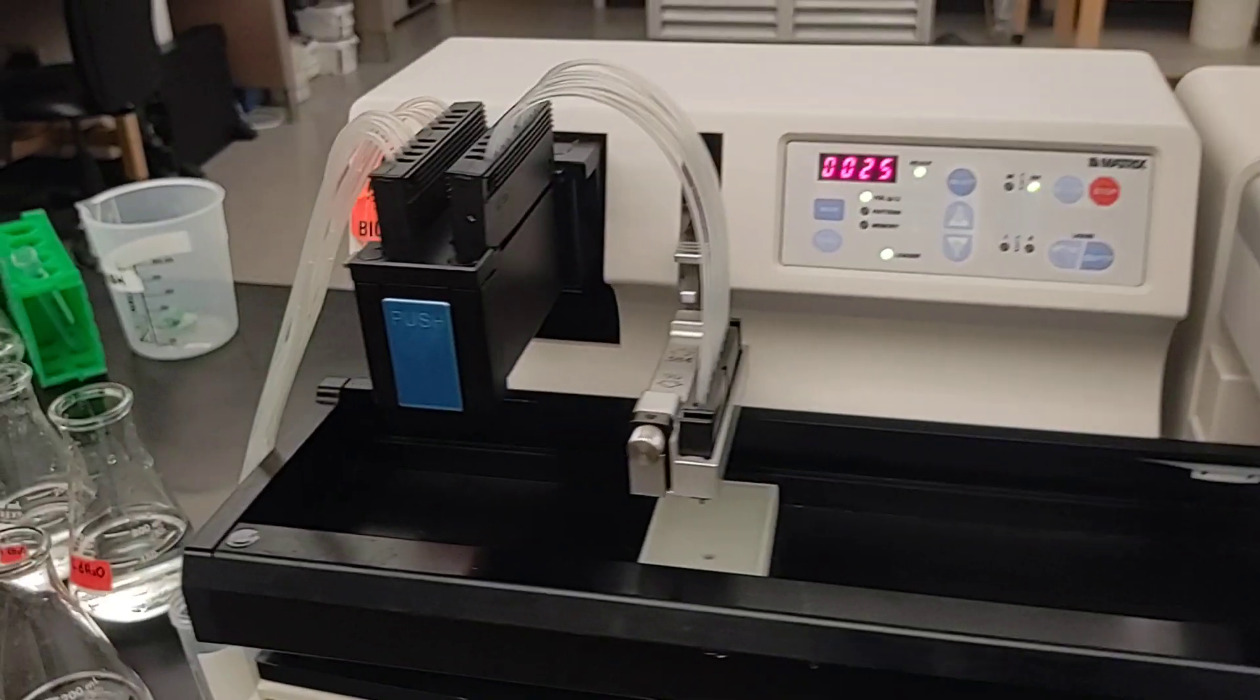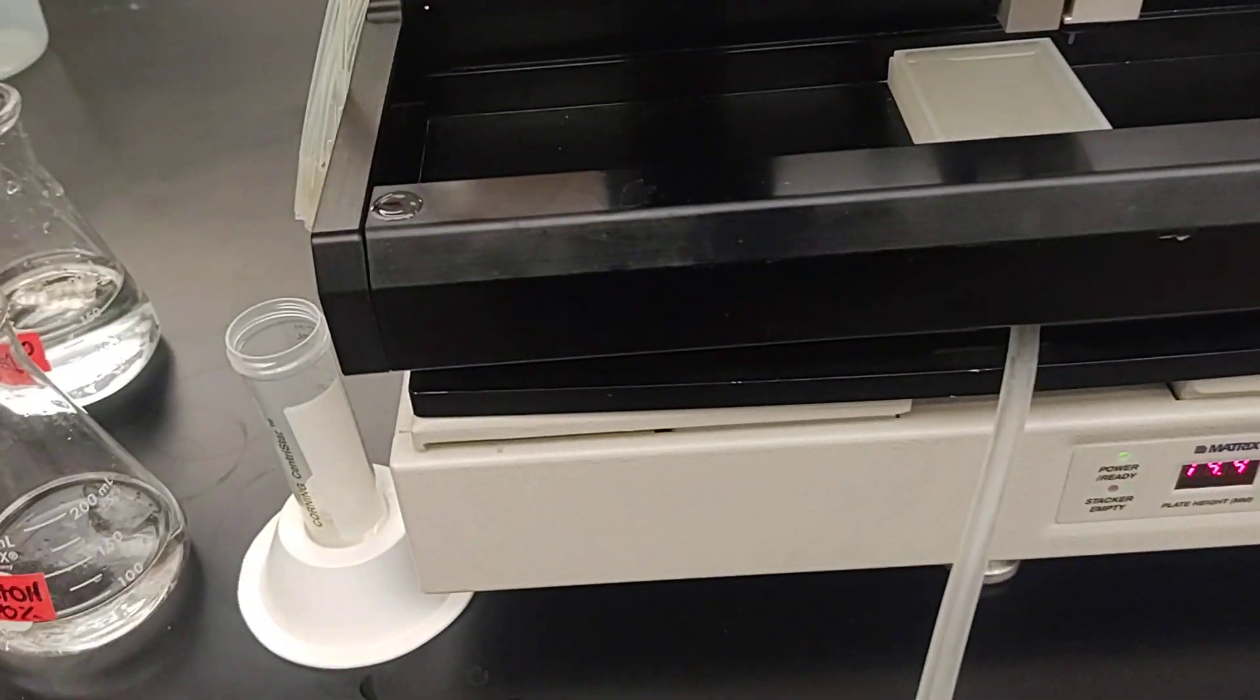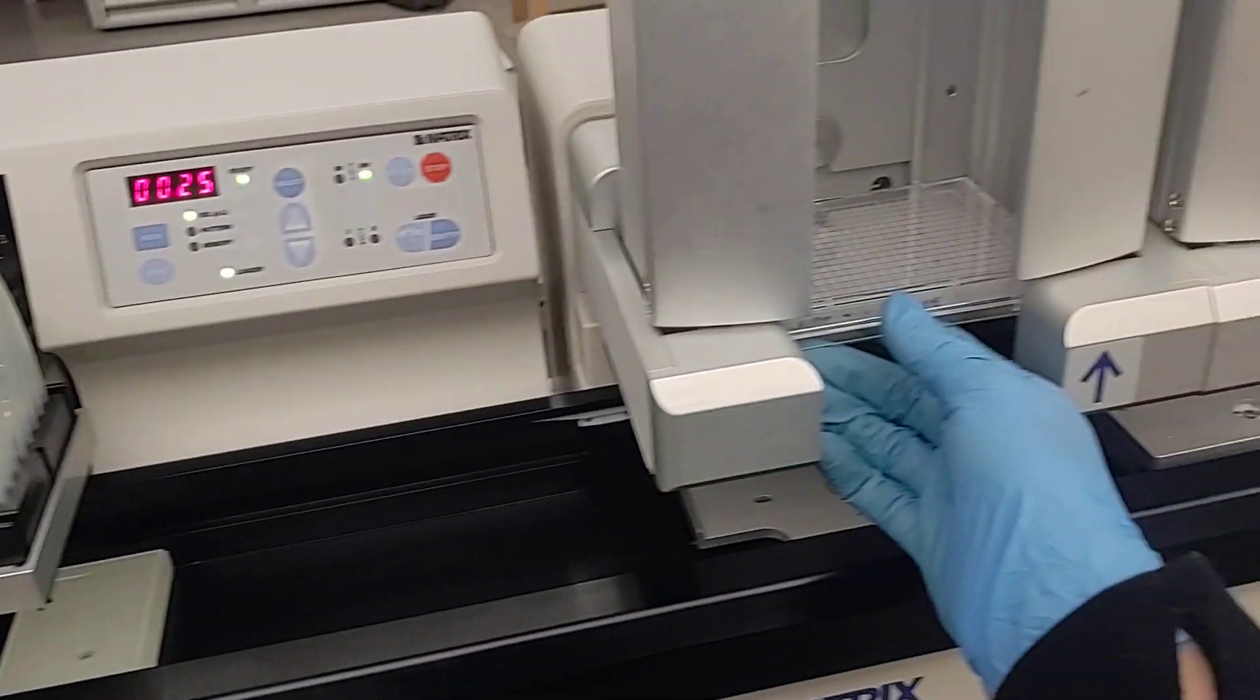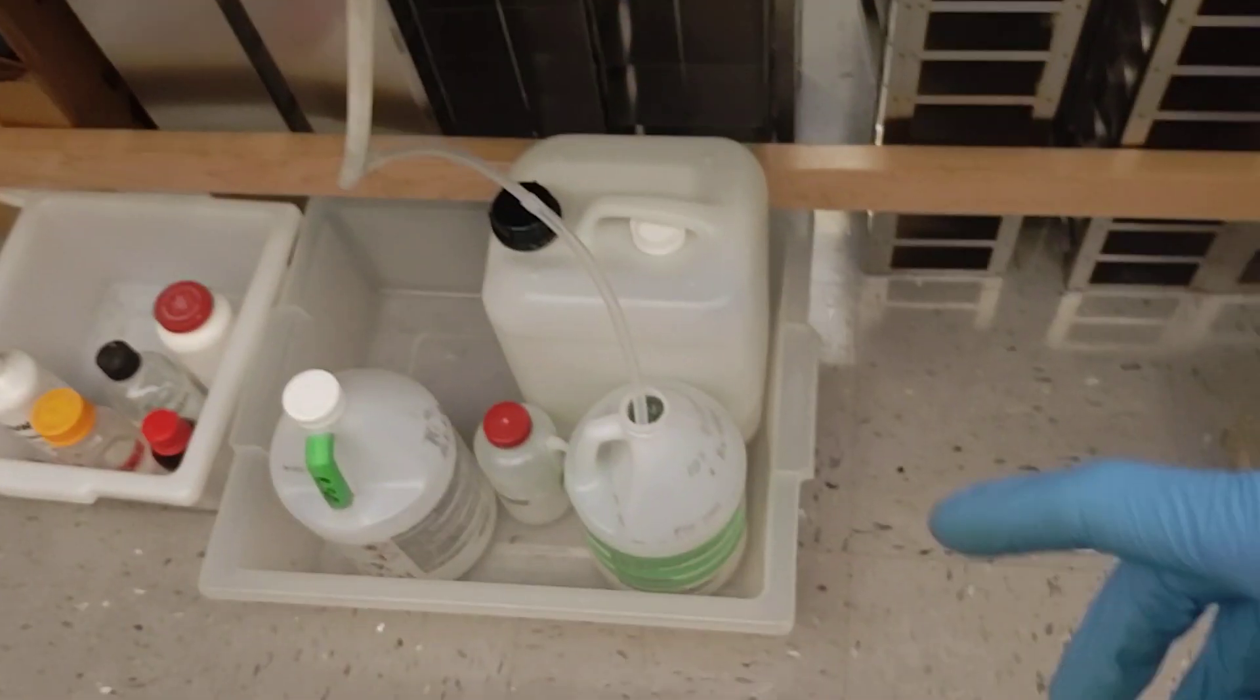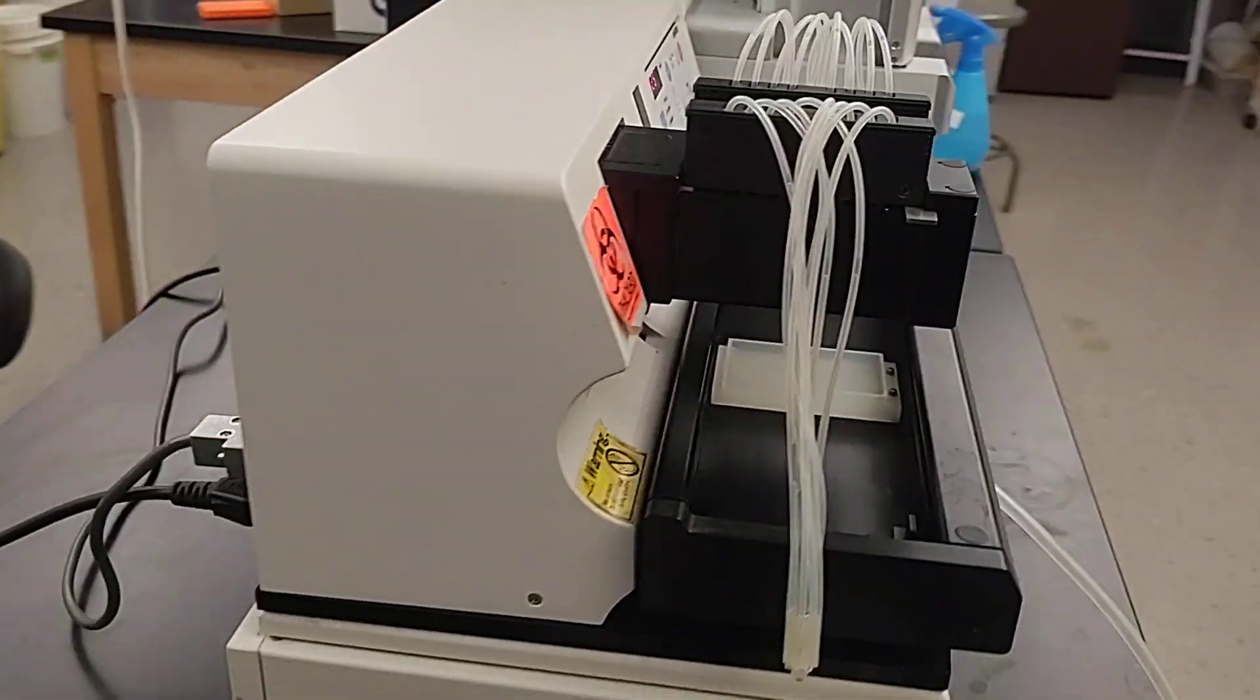When you're done, you want to wash the cassette with this sequence of liquids again. And you will take your plate, you will remove the cassette, put it away in the drawer, close up the waste, and then turn off the stacker and turn off the device.